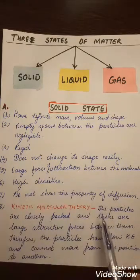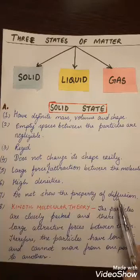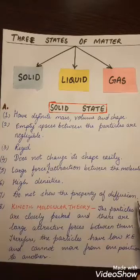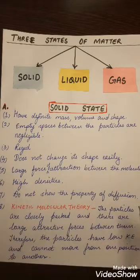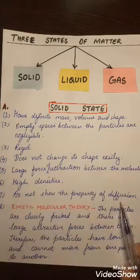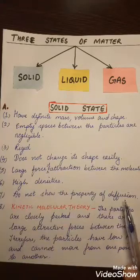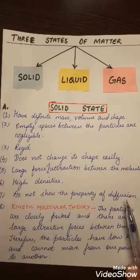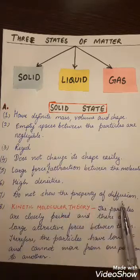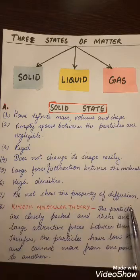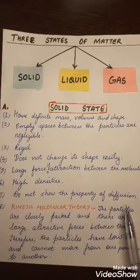Seventh point: solids do not show the property of diffusion. Diffusion is a process where molecules of a material move from an area of higher concentration to an area of lower concentration until equilibrium is reached. Diffusion will not take place in solids due to the maximum force of attraction between molecules and their closely packed arrangement, which makes them rigid with a definite shape.